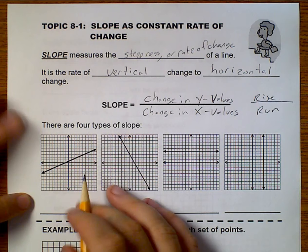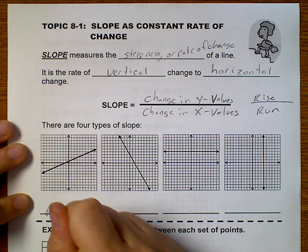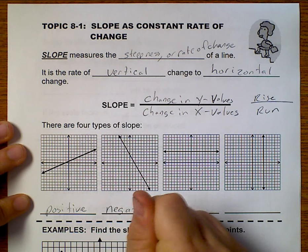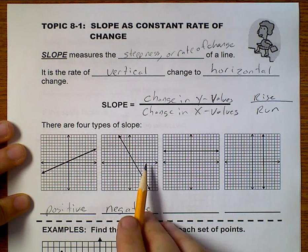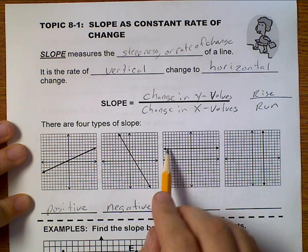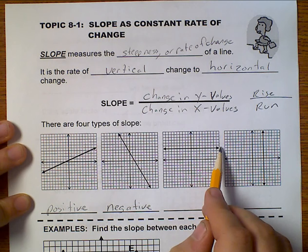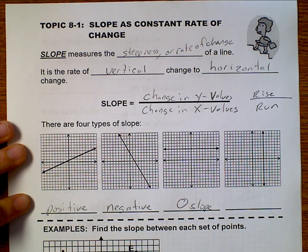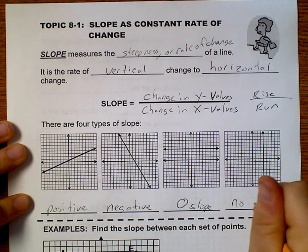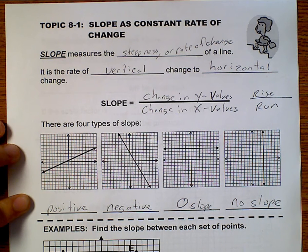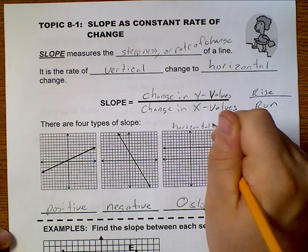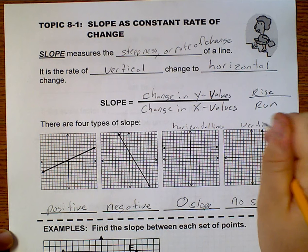There are four types of slope. Here we have positive, because as it goes to the right, it goes up. Next we have negative, because as it goes to the right, it goes down. Here we have a horizontal line, and so this is a zero slope. And over here we have a vertical line, and this is no slope. These are horizontal lines and vertical lines.